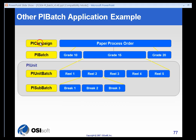Here's another example. We have a campaign which is a paper process order, and this process order might contain many grades of paper. We take one grade — that would be considered the PI Batch level. When you get down to the actual machines that are rolling the paper, that is where the unit batch lives. This particular grade 15 might consist of five different reels. We'll take one reel, for example — it may have three different pieces, all strung on one reel, with sections one, two, and three. Each of these might be considered sub-batches.